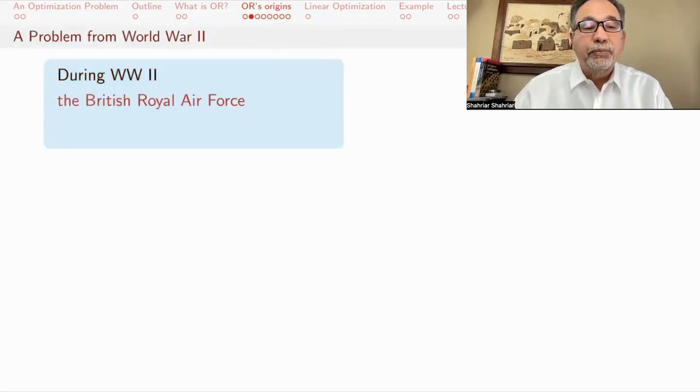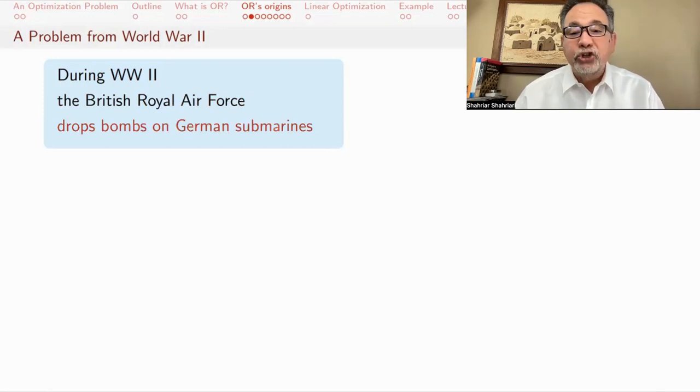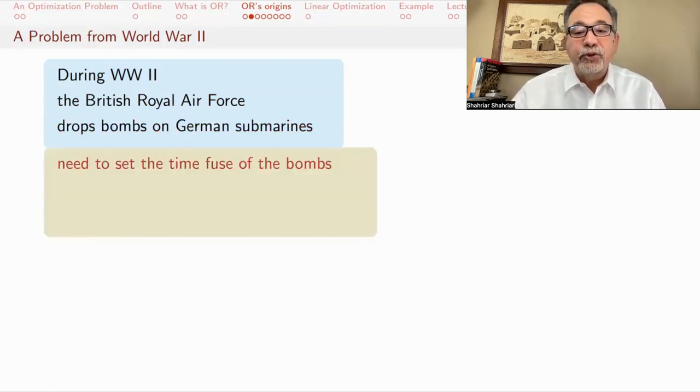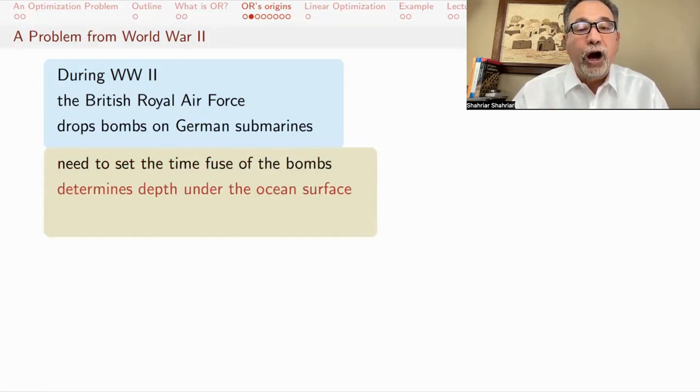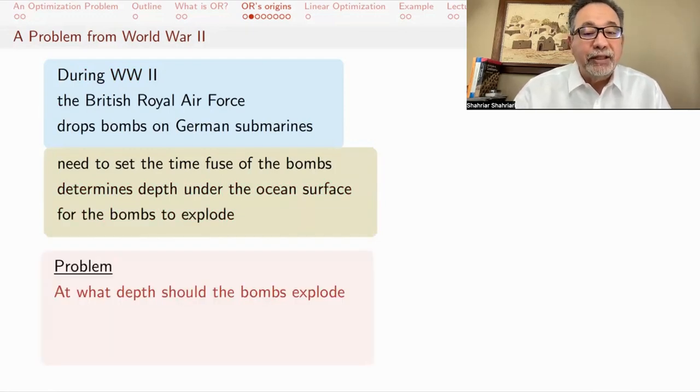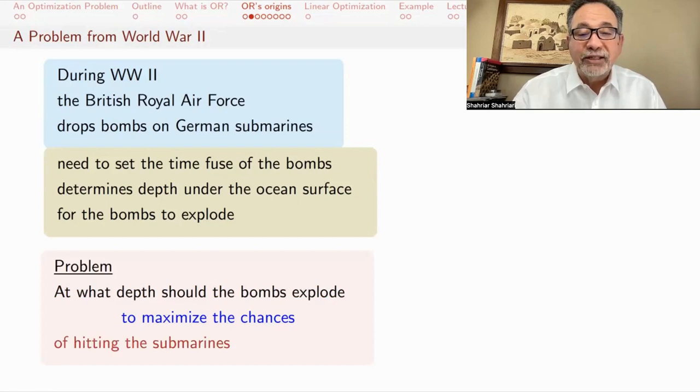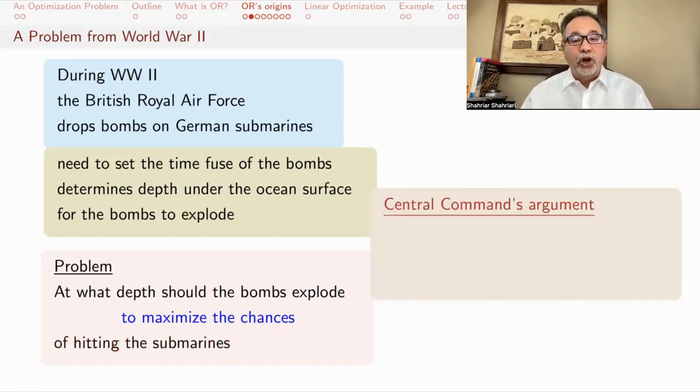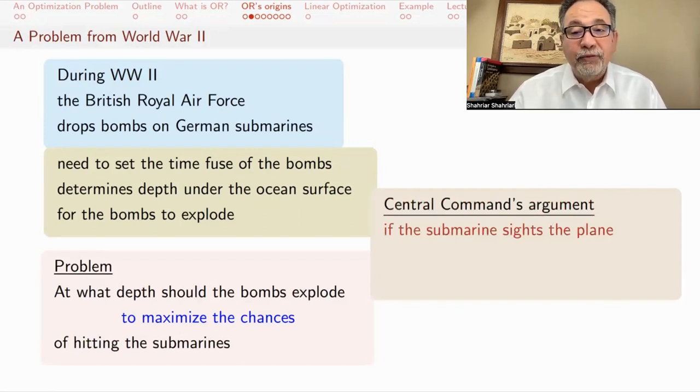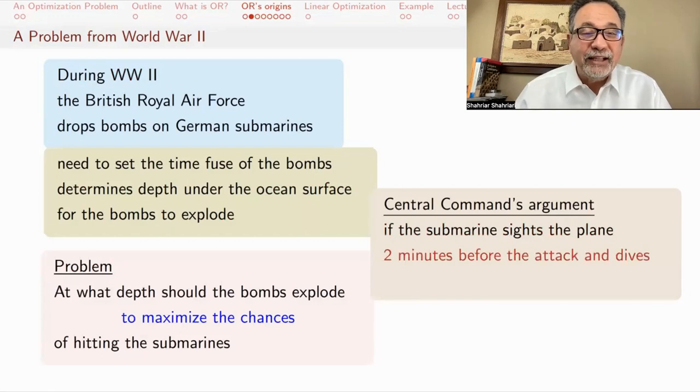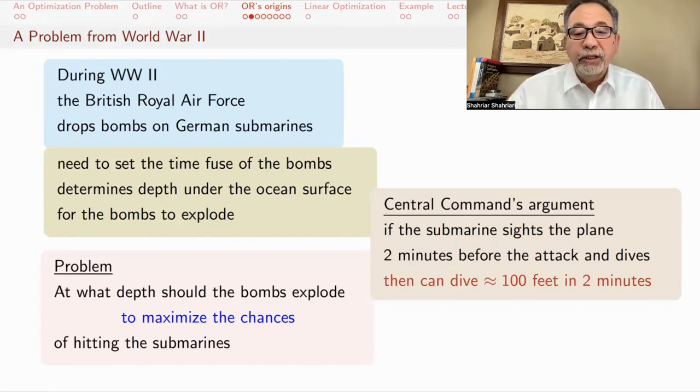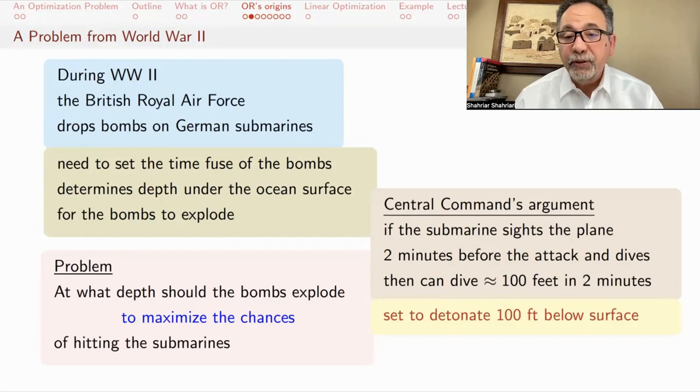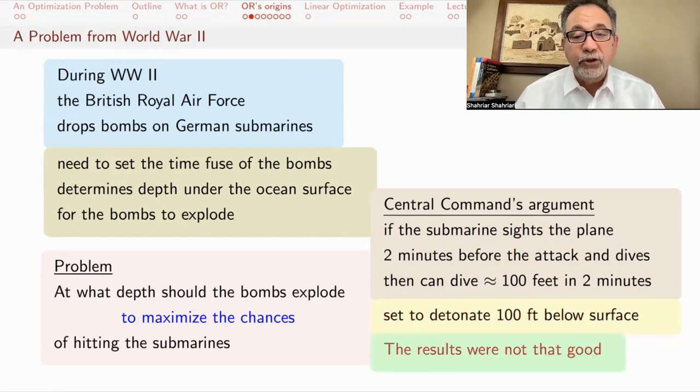Here's a problem. During World War II, the British Royal Air Force, RAF, was bombing German submarines. One of the things they had to do was set the time fuse of the bombs to decide when would the bomb go off after they dropped it, and how far would be the depth under the ocean's surface that it should explode. The Central Command's original argument was that if the submarine sights the plane, it's going to dive. And if it sights it two minutes before the attack and dives, it will be able to go about a hundred feet below the surface. And so they set the fuse to detonate a hundred feet below the ocean surface. But the results were not that good.